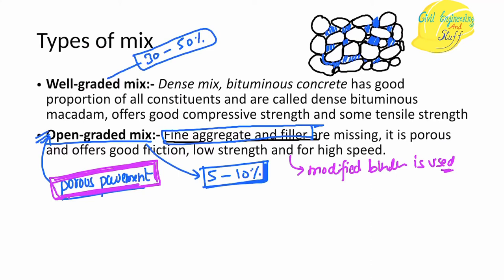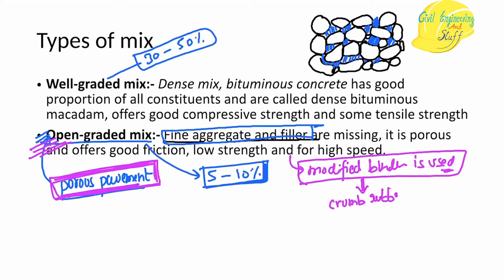Since porous pavements are always in contact with water, and bitumen has an affinity towards water — accumulation of water leading to raveling and damage of the bond between aggregate and binder — modified binders are used to improve adhesion and resistance to moisture. These modified binders are made using crumb rubber and polymer-based bitumens, such as styrene-butadiene-styrene, which have proved very efficient for porous pavements.